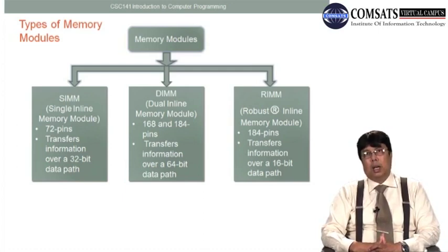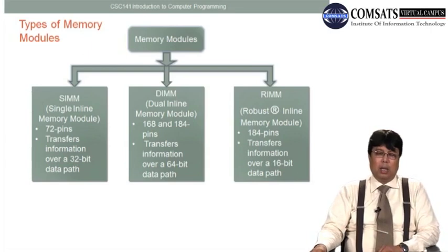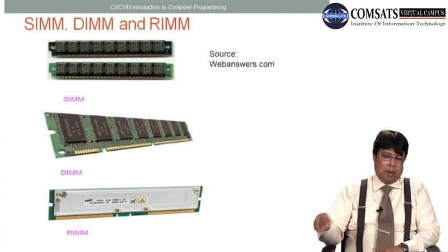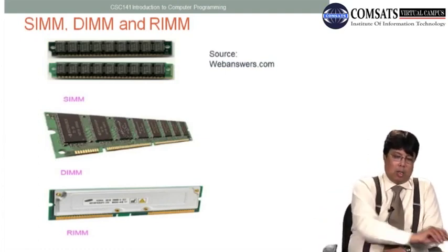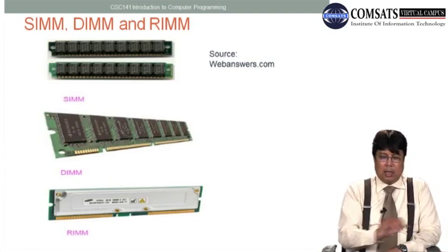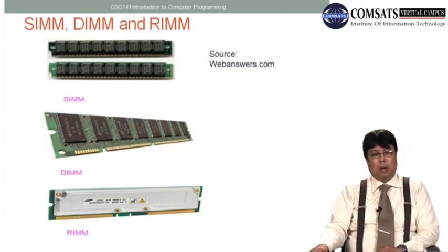Then comes RIMM — Robust Inline Memory Module — with 184 pins, but it transfers information over a 16-bit data path. It occupies less space, and hence it is sometimes preferred over DIM or SIM. You can see the connectors or data paths on the module.